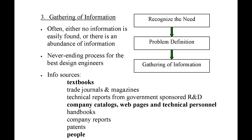Common sources for background information include textbooks, magazines, technical reports, company catalogs and websites, as well as patent searches. A generally underutilized resource, however, is people. After performing basic research on a topic, one of the best ways to solidify your understanding is to contact a company that specializes in that area and speak to an applications engineer. Coworkers can often provide valuable information as well; however, make sure you research the topic before just asking a coworker, so you don't develop a reputation as someone who is lazy or incapable of performing their own background research.